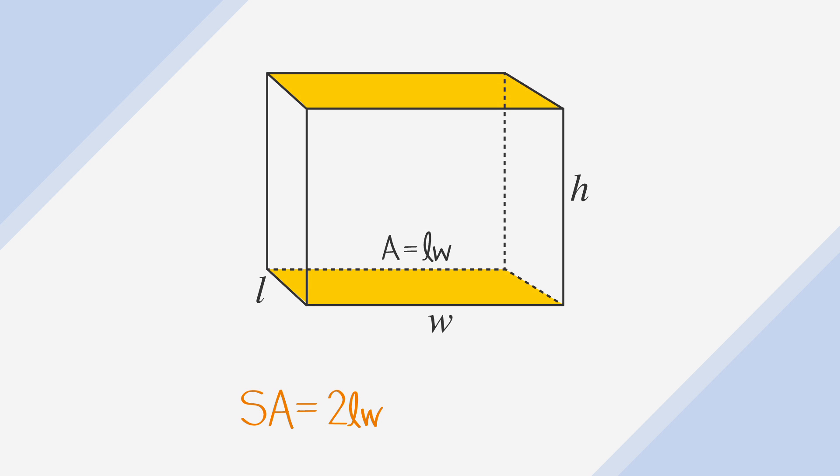It's the area of the top and bottom of the box, the length times the width times two, because there are two of them, plus the area of the sides of the box, the length times height times two, plus the area of the front and back of the box, the width times the height times two.